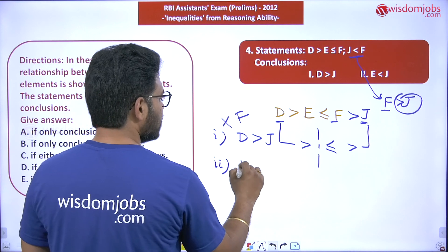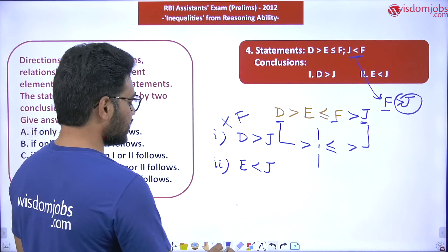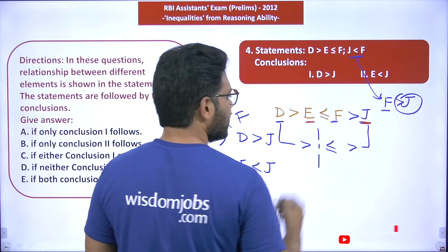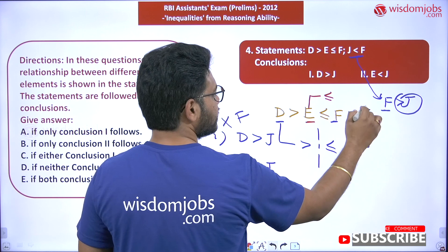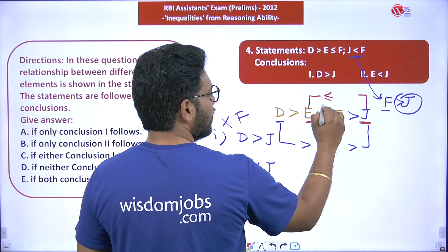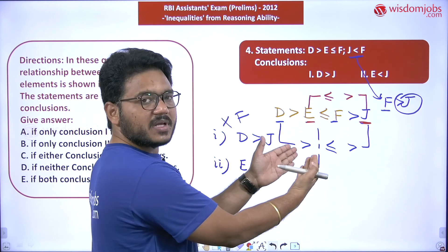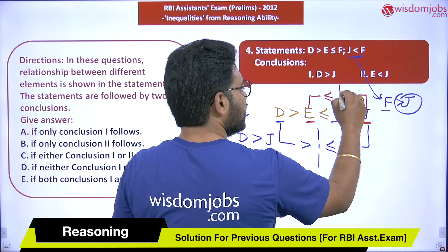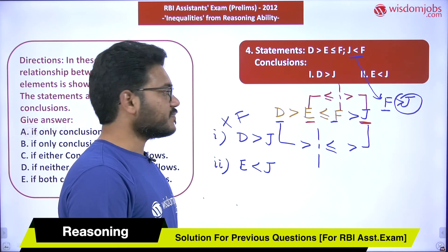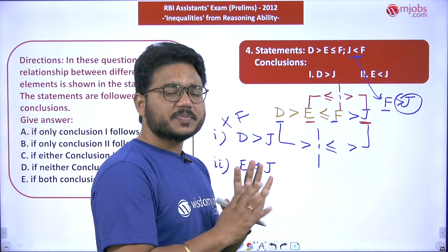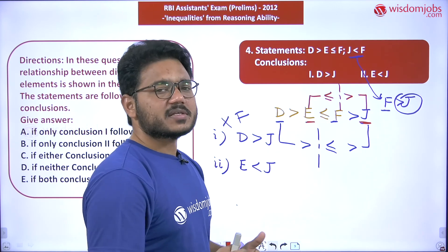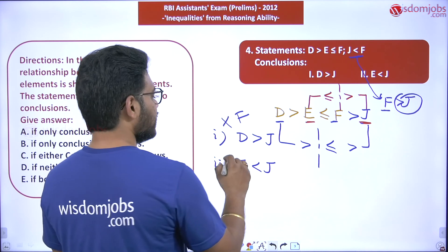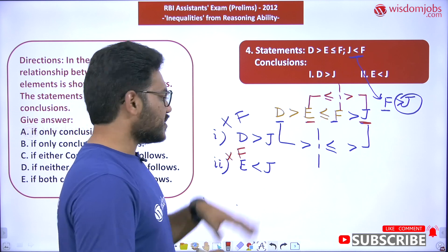The second conclusion is: E < J. We identify E and J in the merged statement. Between E and J the symbols are: less than or equal to (≤) then greater than (>). Again, opposite symbols — one lesser, one greater. So similar to the first case, no relationship can be established. Unless some more supporting conclusions are given, we cannot determine that case, so the second conclusion is also straightaway false.